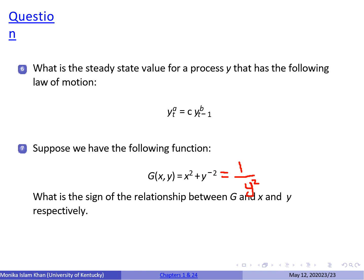Now suppose we have the function g(x, y) = x² + 1/y². We need to find the relationship between x and g, and between y and g. As you can see from the equation, x and g have a positive relationship — if x increases, g(x, y) also increases. But if we increase y², that will decrease g, so g and y have a negative relationship.